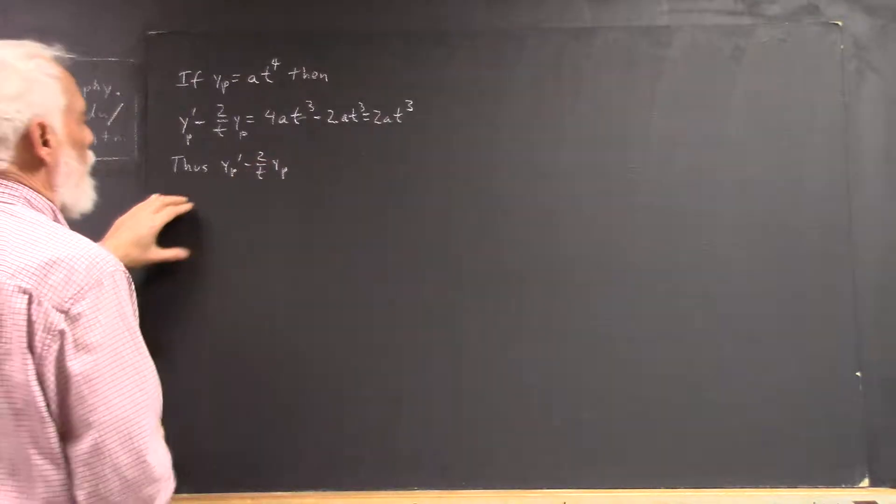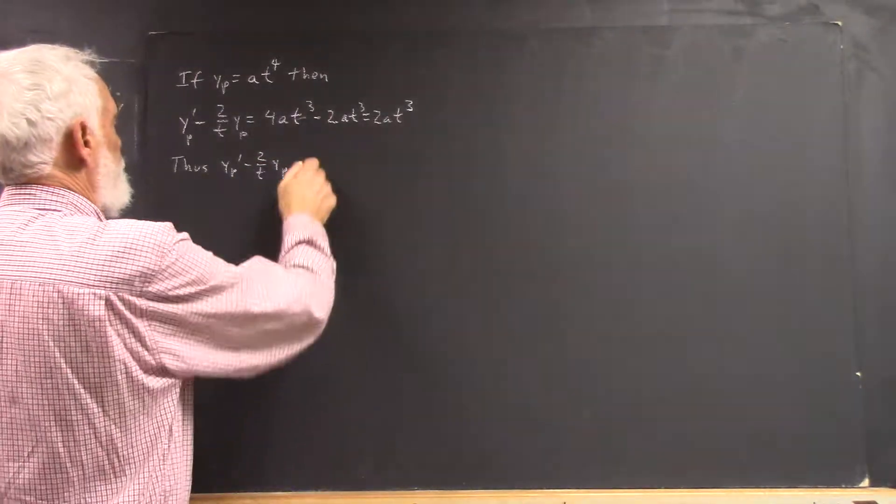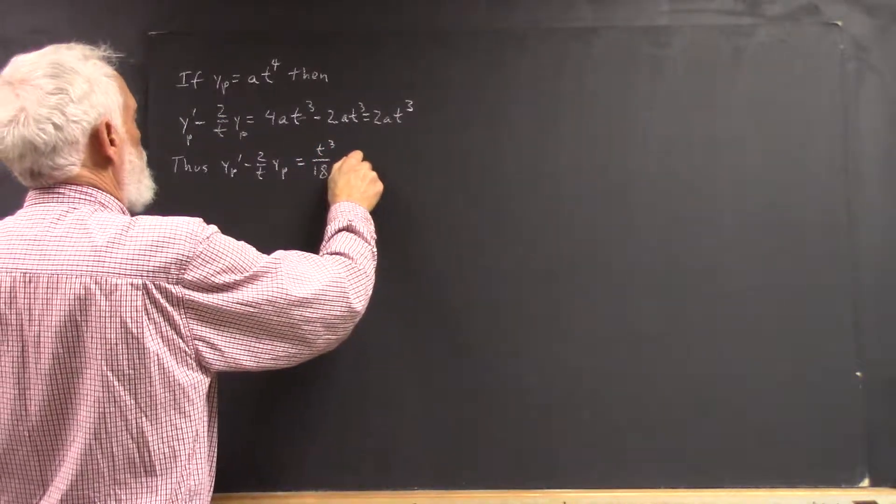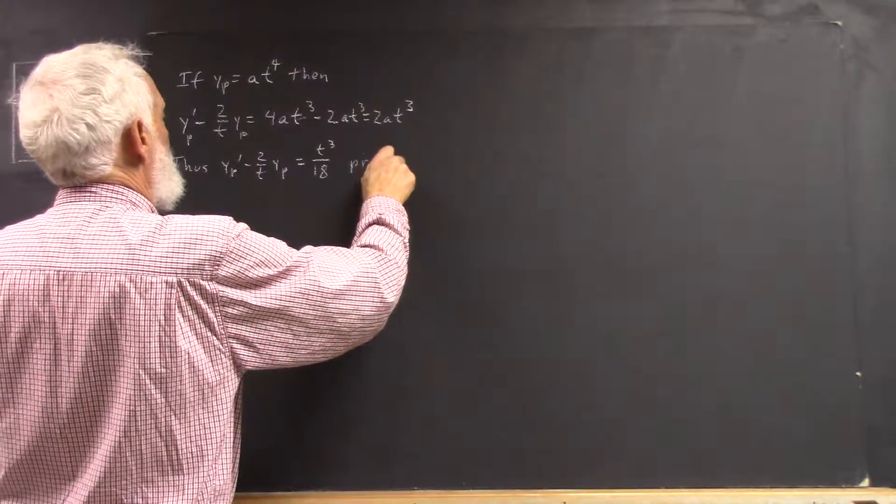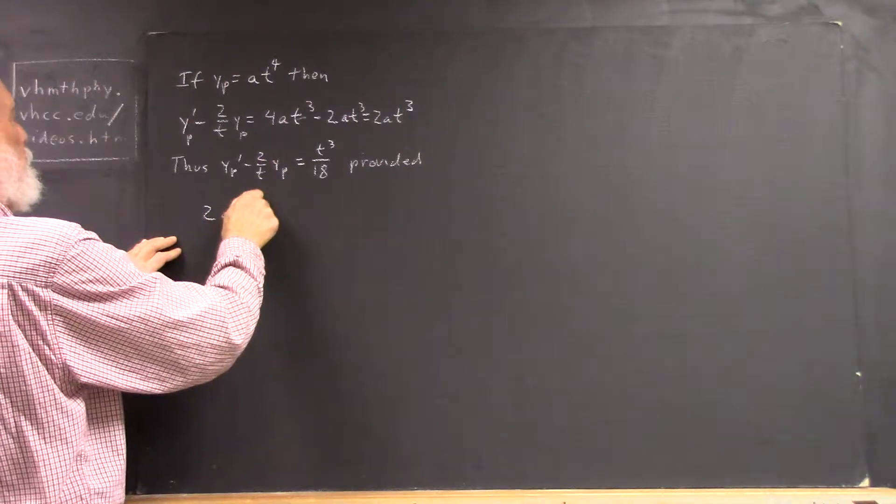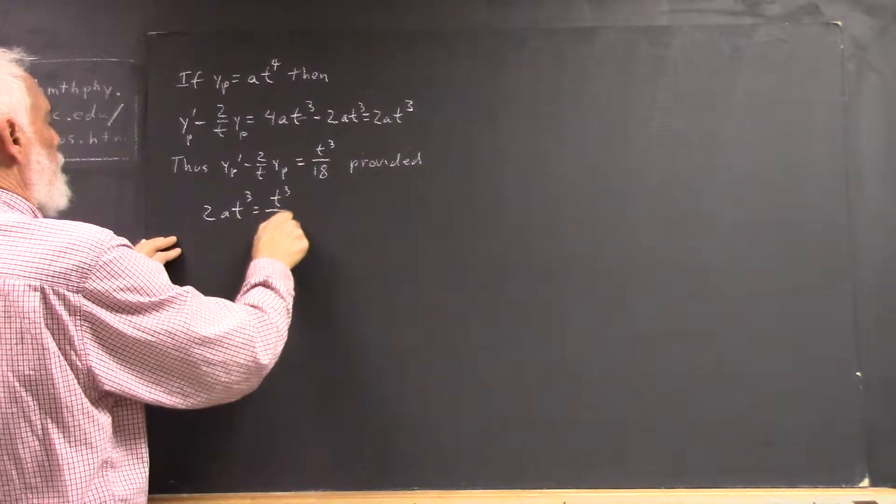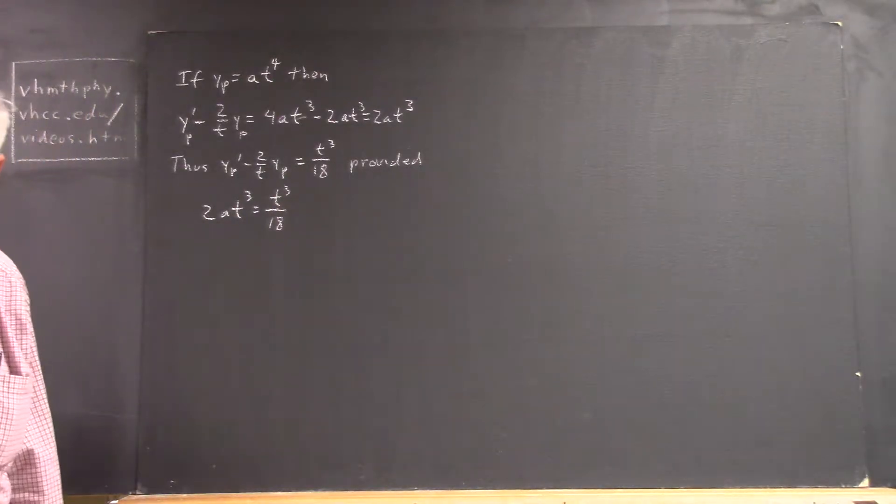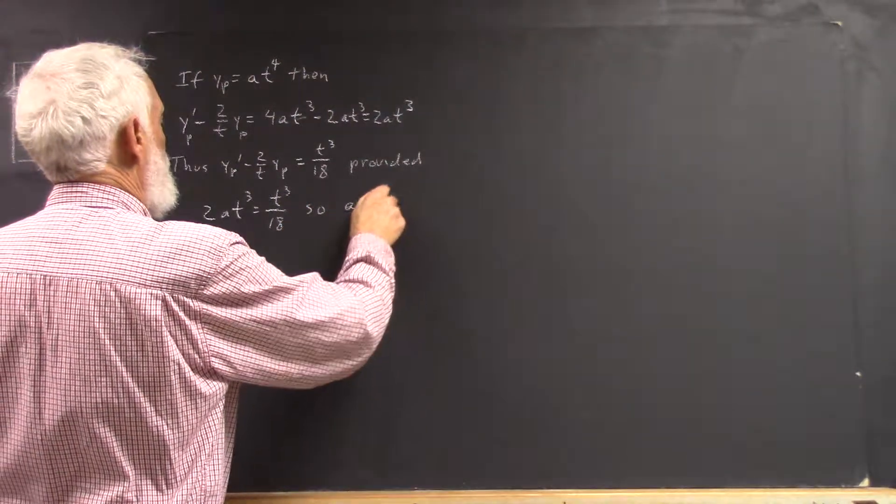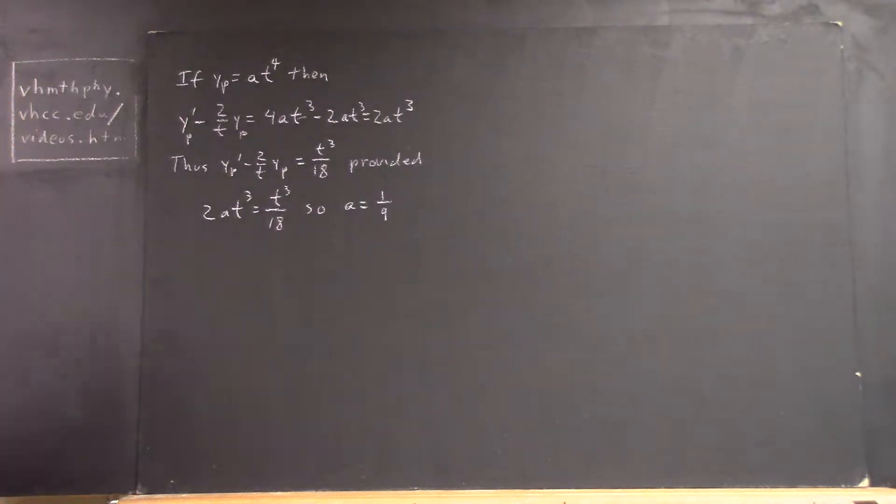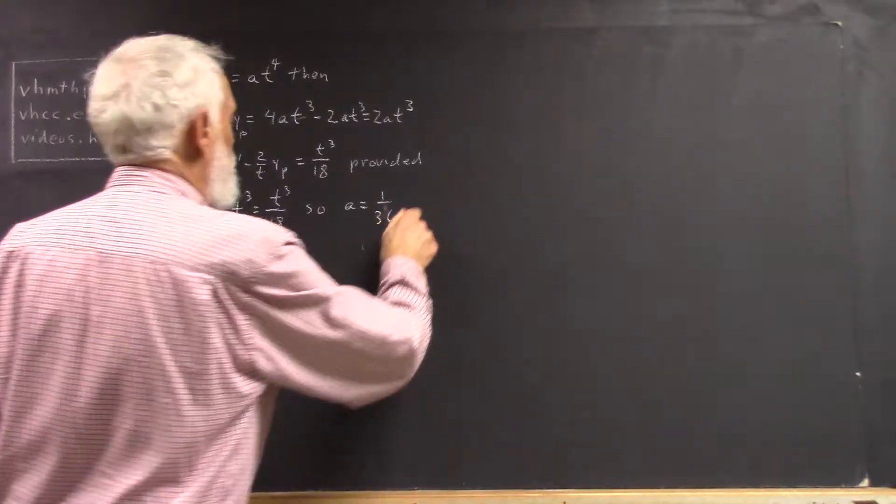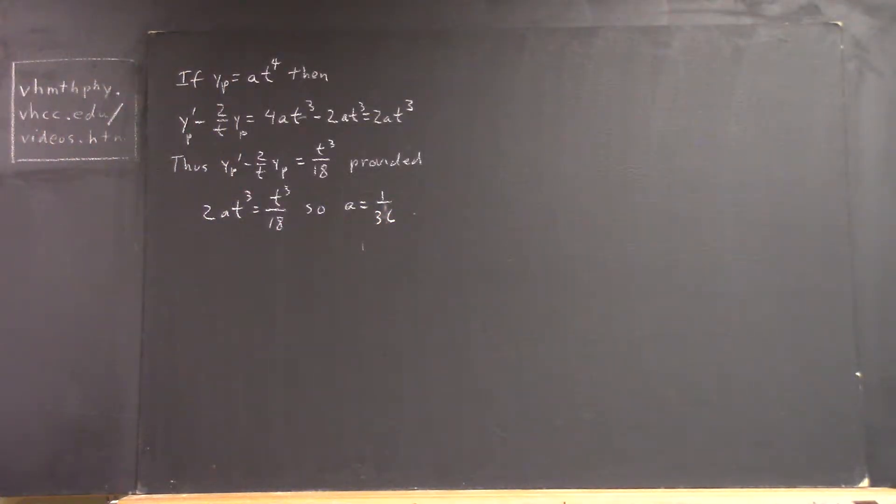Well then, yp prime minus 2 over t yp equals t cubed over 18, provided 2at cubed equals t cubed over 18, right? And it follows that a is not one-ninth, it's one-thirty-sixth. See, you can't trust me. Make sense?